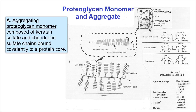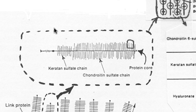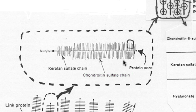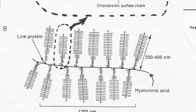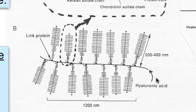Here we see on the top of this diagram a proteoglycan monomer with keratin sulfate and chondroitin sulfate GAGs, and below we see the monomers all coming off the hyaluronic acid backbone of the proteoglycan aggregate.